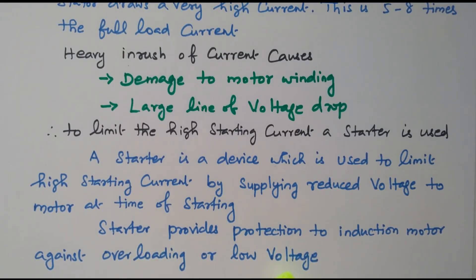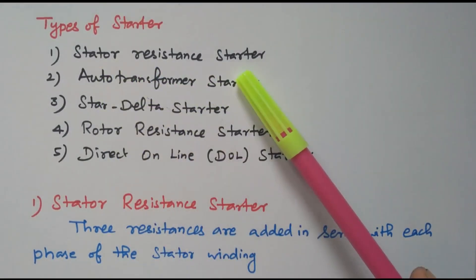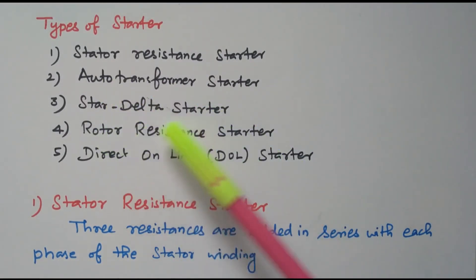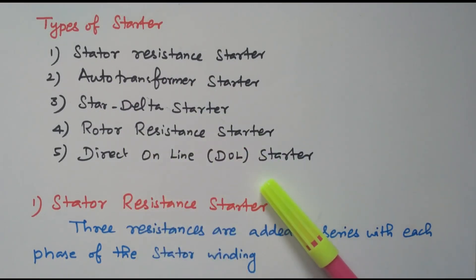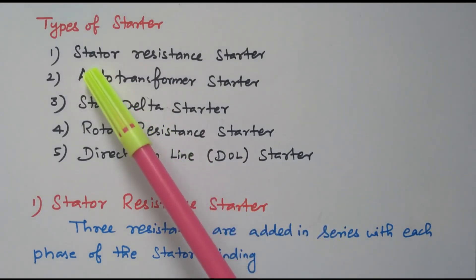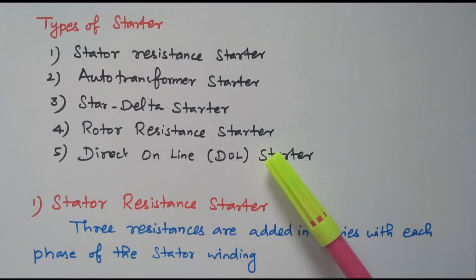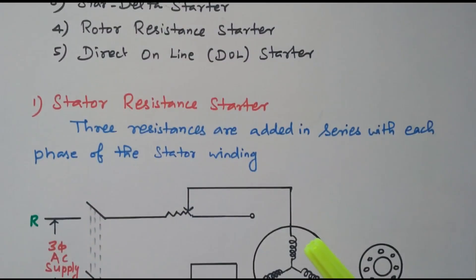Now we will see the types of starters. The first type is the stator resistance starter, then the auto-transformer starter, star-delta starter, rotor resistance starter, and direct-online starter — there are 5 types of starters available. In this video we will see the stator resistance starter; the remaining 4 types are available in separate videos.